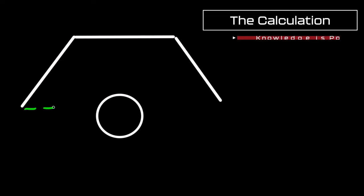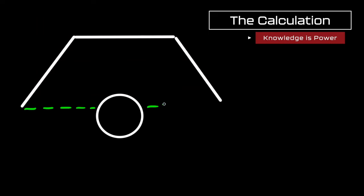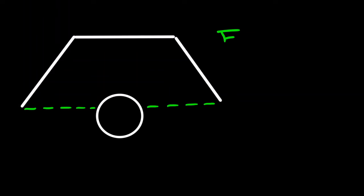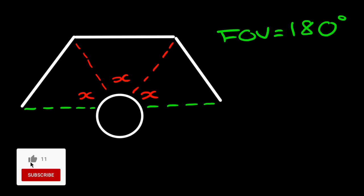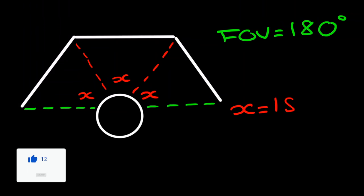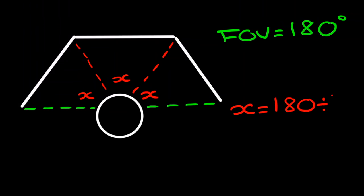To calculate the setting for camera FOV, we're going to be needing to use the FOV we calculated overall for our triple screens in the previous video. In my case, this is represented by the green line, and my FOV is 180 degrees, as my eyes are in line with the edges of the monitor. We simply divide the FOV equally between the three monitors. To calculate the individual FOV, or X, we divide our total FOV — in this case 180 — by three, because we have three monitors, and this gives us 60 degrees.